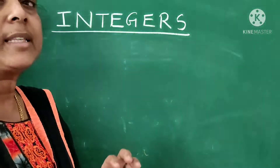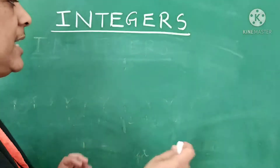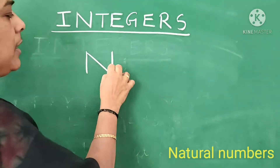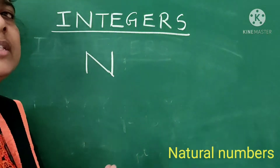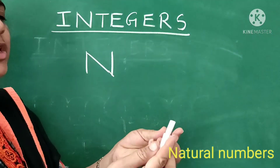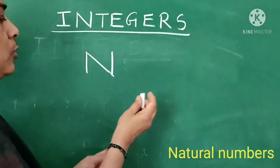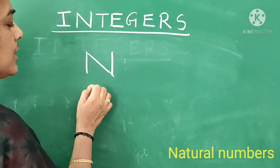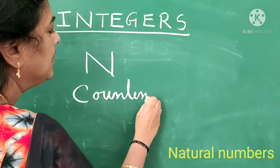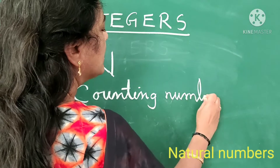What are natural numbers? Natural numbers are denoted as N. Counting numbers are known as natural numbers. For example, if I am asking how many chalk pieces are here, we can count 1 and 2. So counting numbers are known as natural numbers.